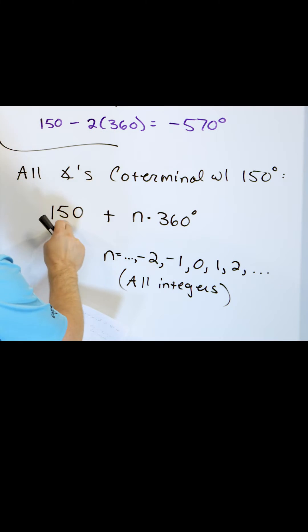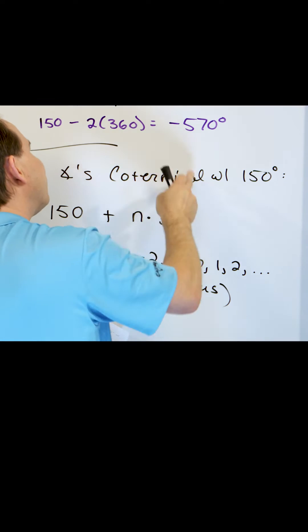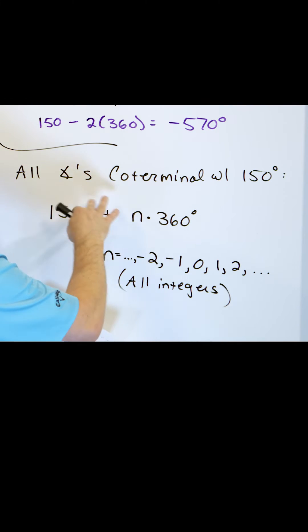If I add two and three and four and five, we're going to get bigger and bigger numbers. Or I could subtract 360 going the other way, negative one, negative two, negative three, and so on.